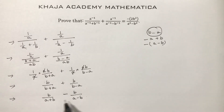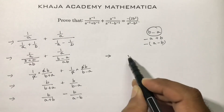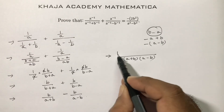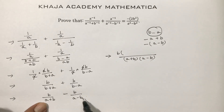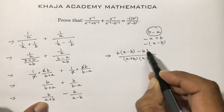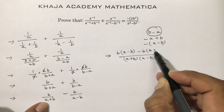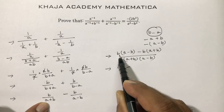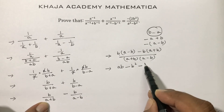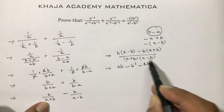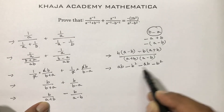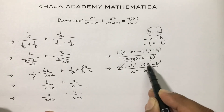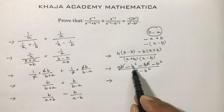Now taking LCM of (a + b)(a − b): multiply b by (a − b) in the first term, giving ba − b², and subtract b times (a + b), giving ba + b². So the numerator is b(a − b) − b(a + b) = ab − b² − ab − b².